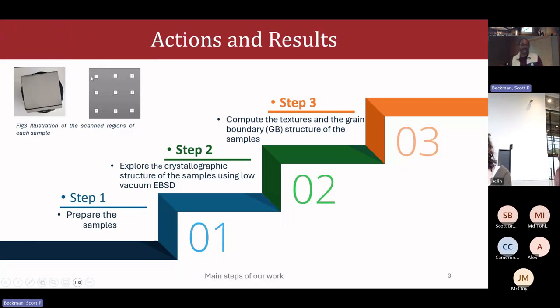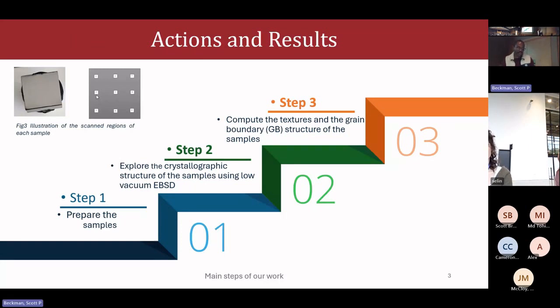We did nine scans for each sample — three at the left, three in the middle, and three on the right of the sample — and then we plotted the texture.